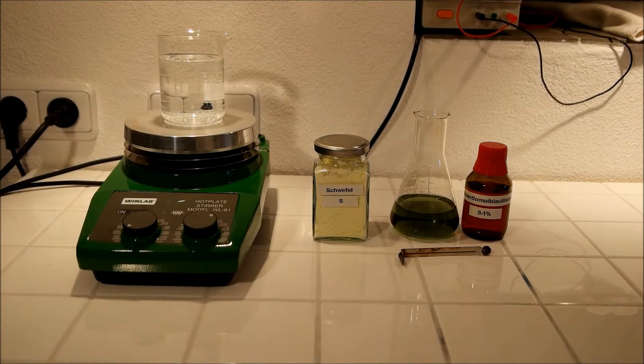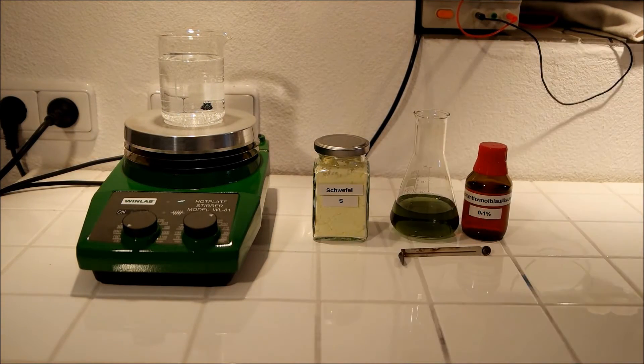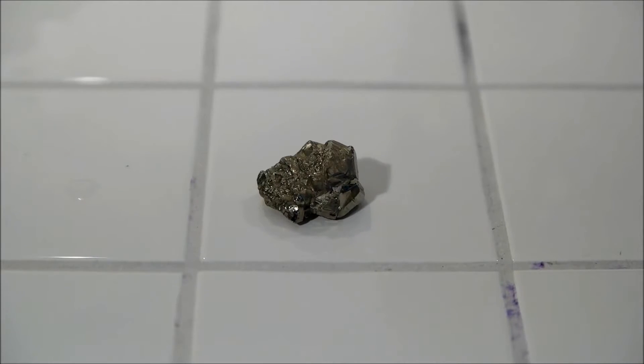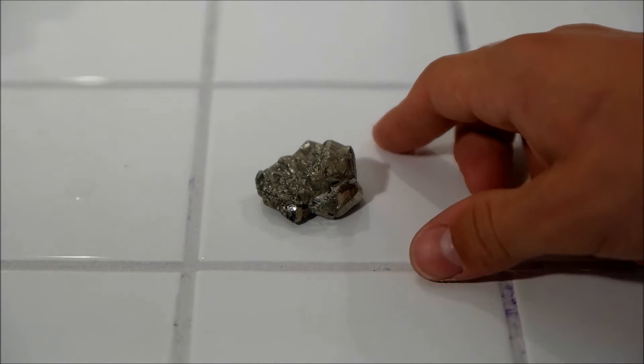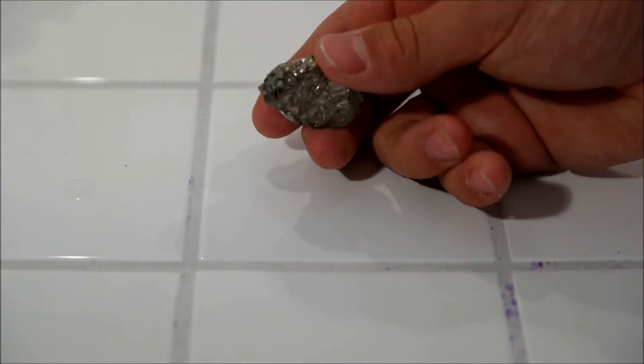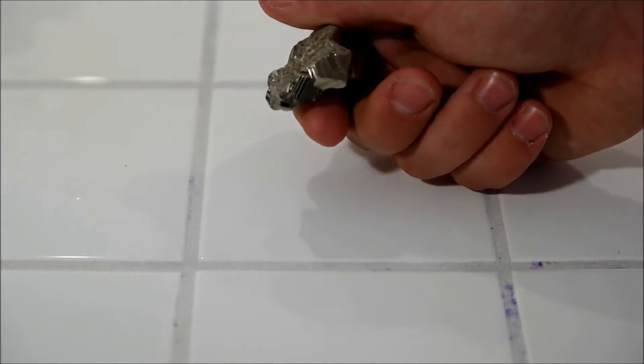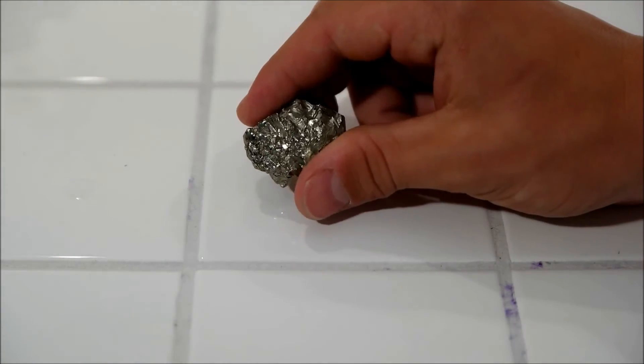What else you need is a Bunsen burner to light up the sulfur later. Instead of burning sulfur you can get sulfur dioxide gas by roasting fool's gold or pyrite which is this mineral composed by iron and sulfur.